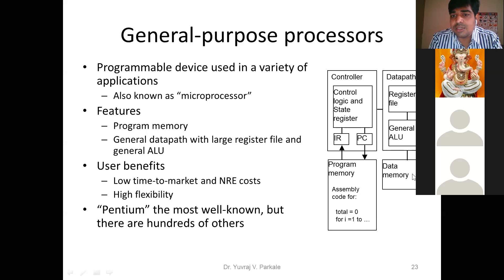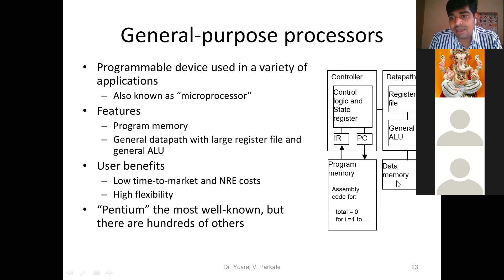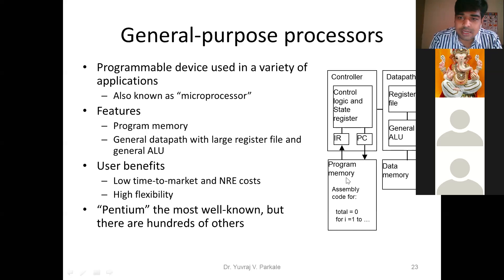If you have a simple program — for example, addition of two fixed numbers like A = 1 and B = 2 — then the program is completely fixed and there is no need to use data memory. But if A, B, and C values will change and get updated frequently, put those three variables into data memory and not into program memory. That is the basic difference.